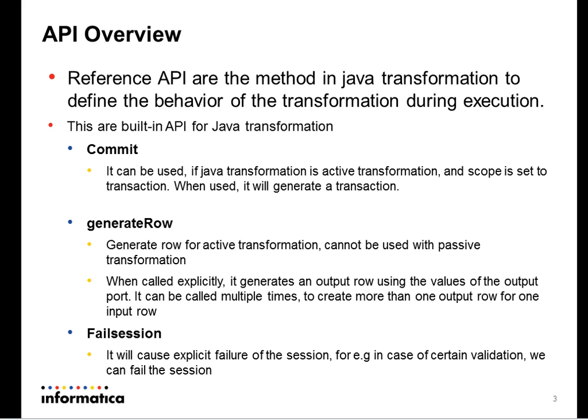What are reference APIs? The reference APIs are methods in the Java transformation that define the behavior of the transformation during execution time. There are a number of built-in APIs in the Java transformation which define the execution behavior.